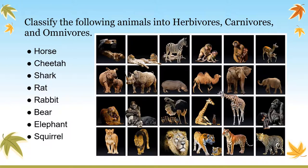Now let us see if we can divide the following animals into herbivores, carnivores, and omnivores. Horse is a herbivore animal because it eats grass. Cheetah hunts other animals and eats their flesh, so it is a carnivore animal. Shark eats other small fishes, so it is also a carnivore animal. Rat, as we discussed, eats grains and sometimes leftover meat, so it is an omnivore animal.